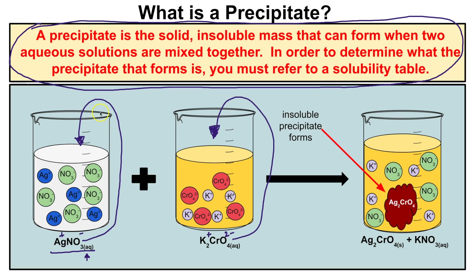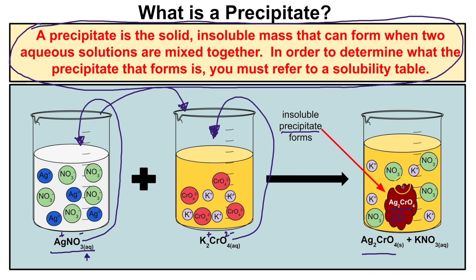When you mix these two beakers together, a solid insoluble mass is produced. The silver ions from one beaker bond with the chromate ions from the other to produce an insoluble mass that no longer stays dissolved in water — this is your precipitate, silver chromate. A solubility table confirms that silver chromate does not dissolve in water. What else is floating around? Free-floating potassium and nitrate ions, which remain aqueous. That is how precipitates form on a microscopic level.